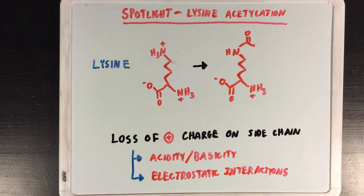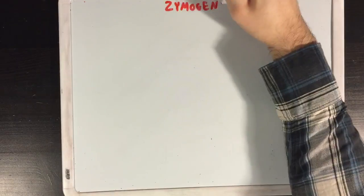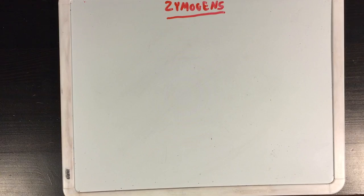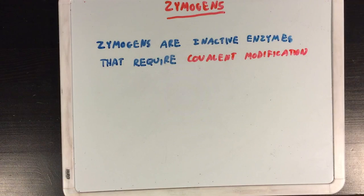So even a small modification, like the addition of an acetyl group, can have significant impacts on the protein overall. Moving on, I want to discuss another way in which covalent modification of enzymes is relevant, and that's in reference to zymogens. A zymogen is an inactive form of an enzyme that requires a covalent modification in order to become active.